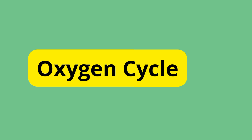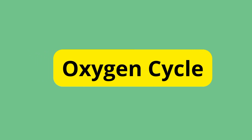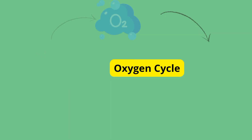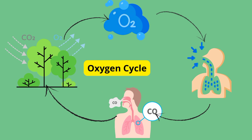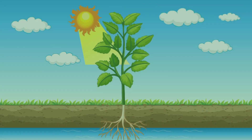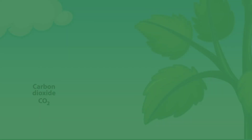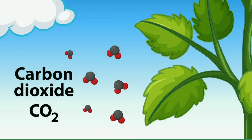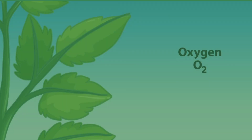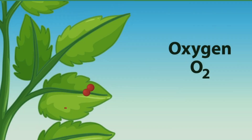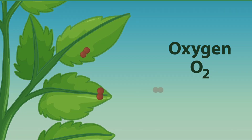Let's start with the oxygen cycle. It's like nature's breathing process. Plants are the superheroes here. They take in carbon dioxide and, using sunlight, convert it into oxygen through photosynthesis.